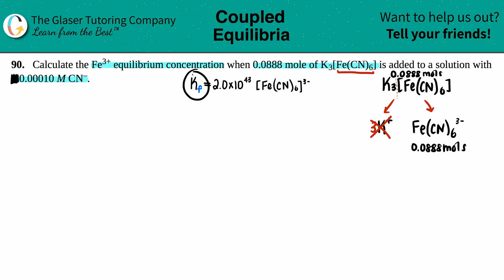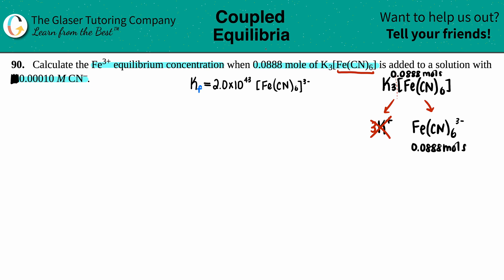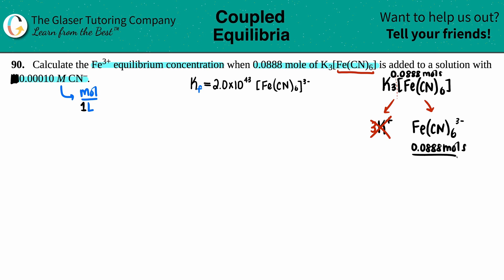When using Kf values, we need molarities. The problem doesn't give a volume, so we assume one liter — justified because CN⁻ was given as a molarity, which equals moles divided by liters. Dividing 0.0888 moles by one liter gives 0.0888 molarity for the complex ion.